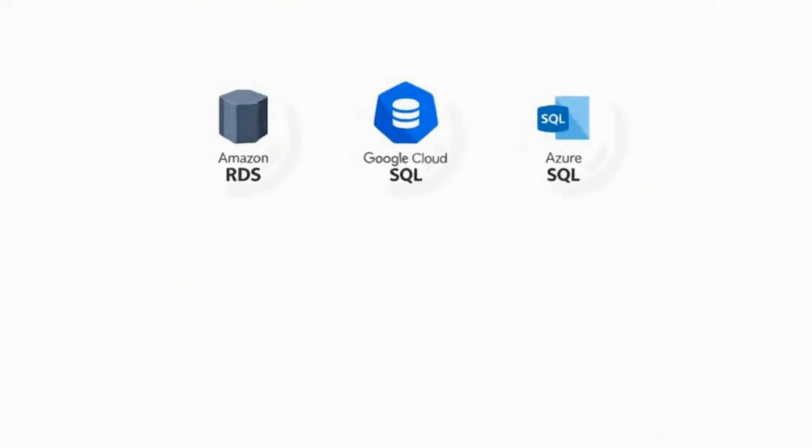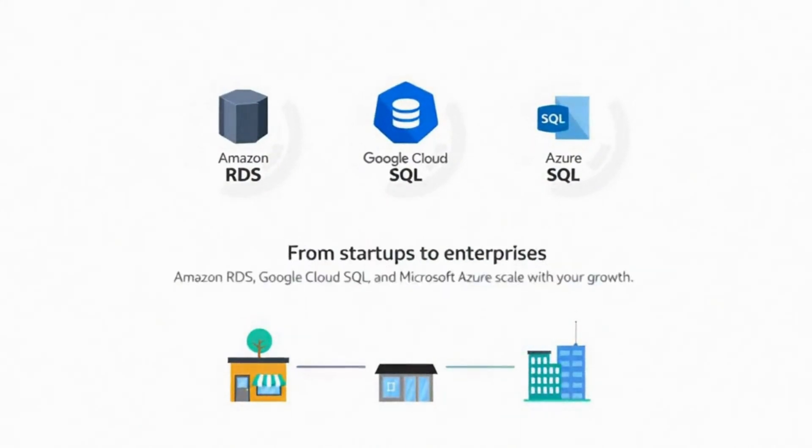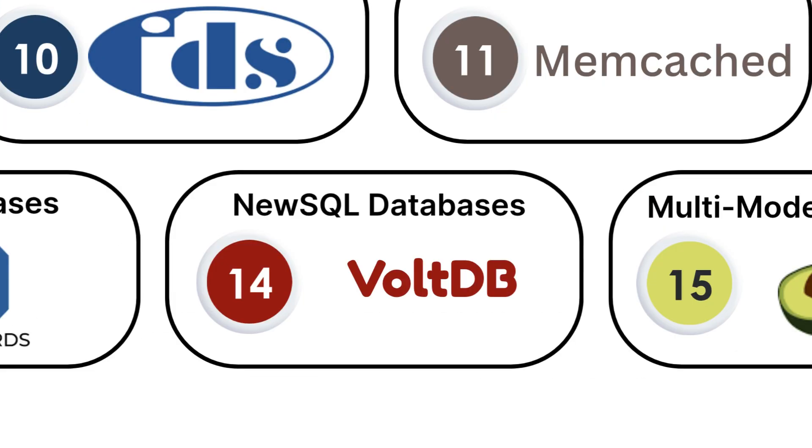Amazon RDS, Google Cloud SQL, and Microsoft Azure SQL are popular examples used by companies ranging from small startups to large enterprises.